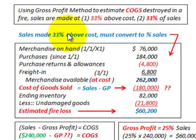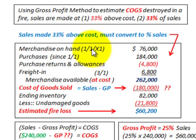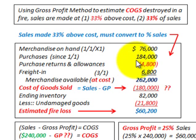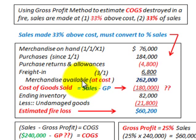When there are sales made at 33% above cost, you must convert this 33% above cost to the percent of sales. We're looking at the period from the first of the year until March 1st. We have some merchandise on hand, purchases since that date, purchase returns, and freight in on cost. The merchandise available at cost is $262,000.